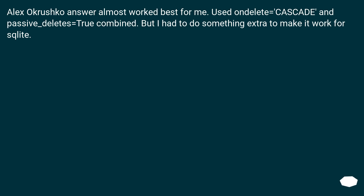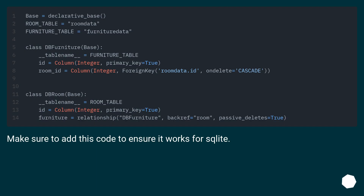Alex Okrushko's answer almost worked best for me. I used ON DELETE CASCADE and passive_deletes=True combined, but I had to do something extra to make it work for SQLite. Make sure to add this code to ensure it works for SQLite.